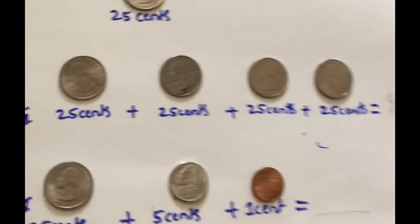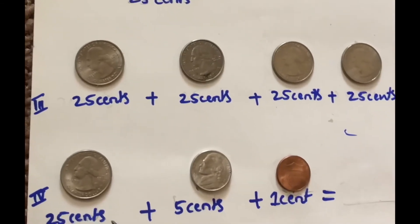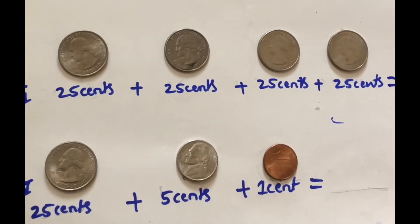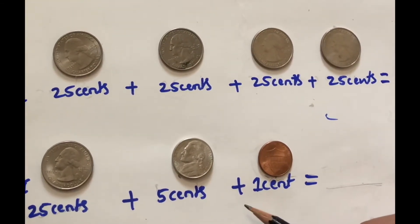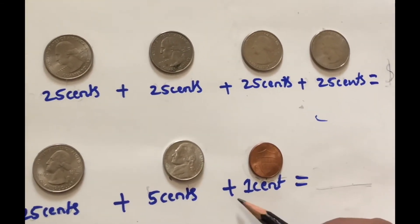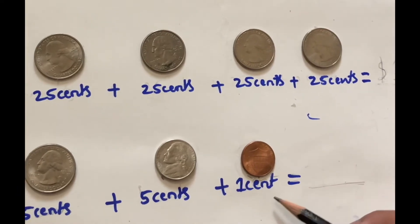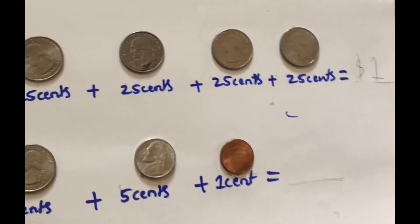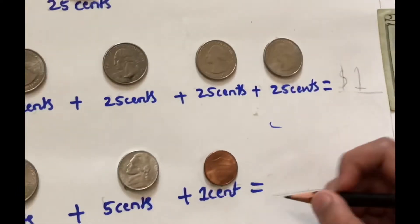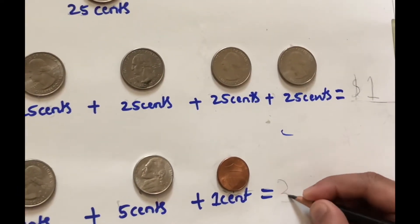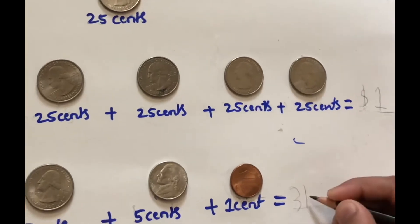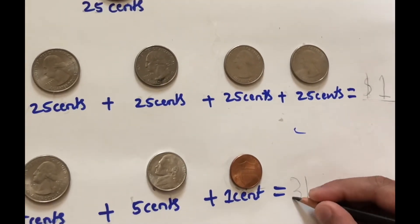Twenty-five cents plus five cents plus one cent is equal to thirty-one cents.